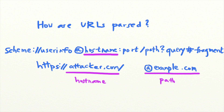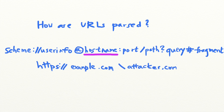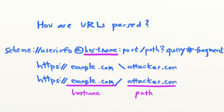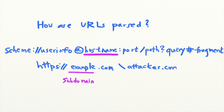Another source of browser-validator inconsistency is slashes. Most browsers and validators will treat backward slashes as path indicators. However, if either the browser or the validator does not implement this, the inconsistency could lead to bugs. For example, this URL is potentially problematic. If the validator treats the backward slash as the path separator, it will interpret the URL one way. On the other hand, if the browser does not recognize the backward slash as the path separator, it will interpret the hostname to be example.com\attacker.com, with example being the subdomain and com\attacker.com being the base domain name.